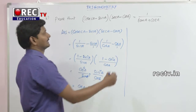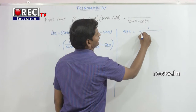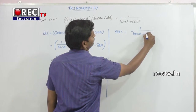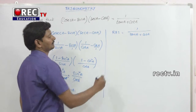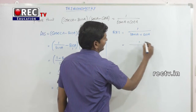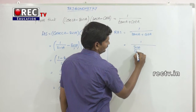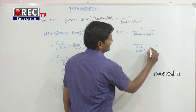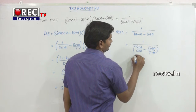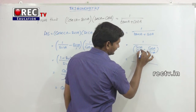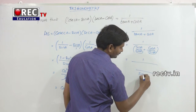Next, consider the RHS. RHS is equal to 1 by tan(a) plus cot(a). We need to convert this into sin and cos. So tan(a) means sin(a) divided by cos(a), plus cot(a) means cos(a) divided by sin(a). The LCM of cos(a) and sin(a) is sin(a) into cos(a).